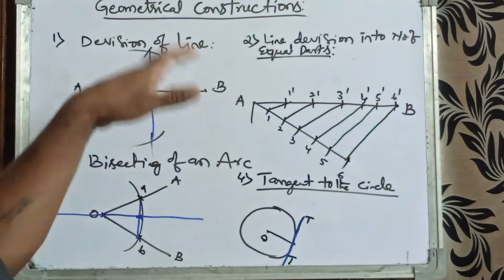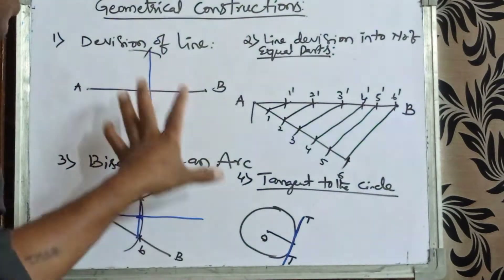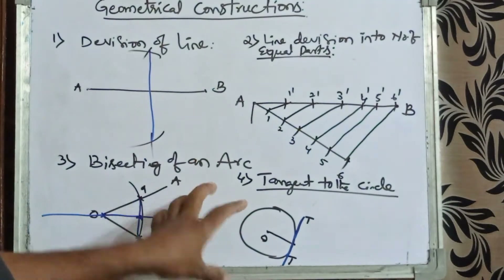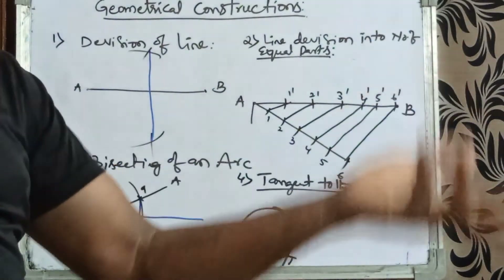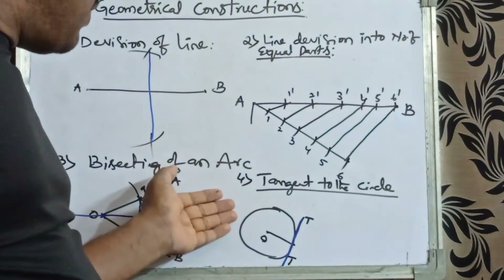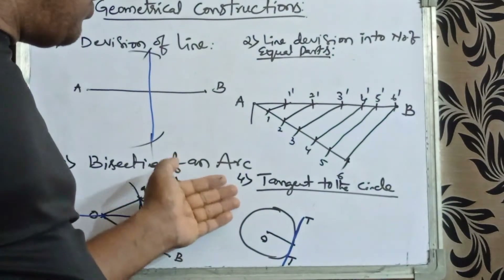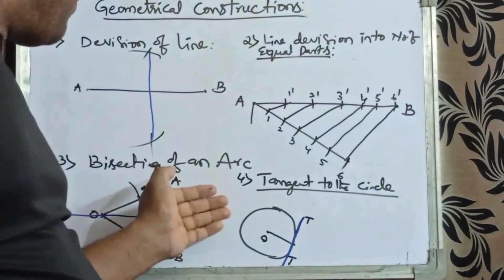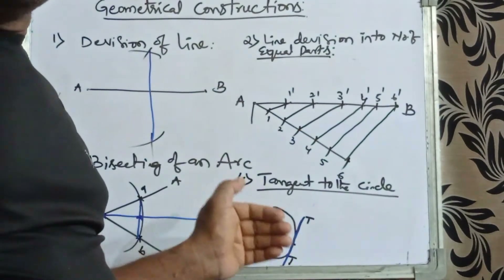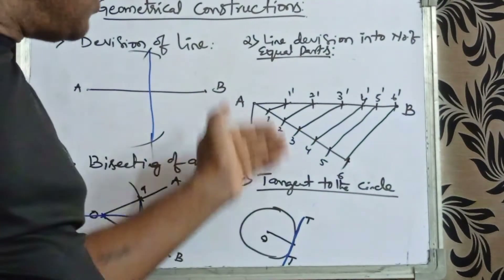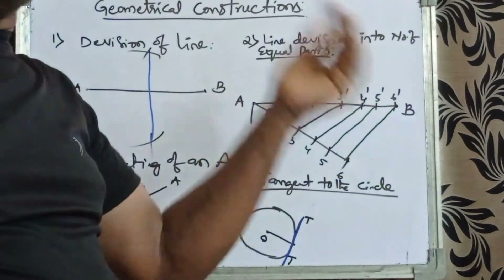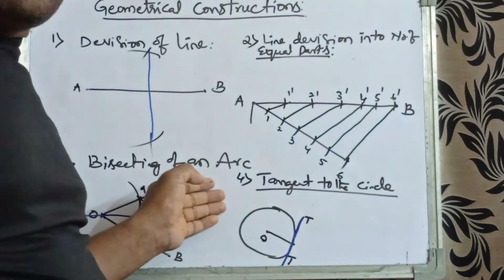These are the main geometrical constructions that help us solve the remaining problems. After completion of this, we will see the dimensions procedures. These all belong to sheet number one, already given in the previous video.